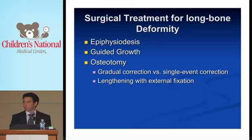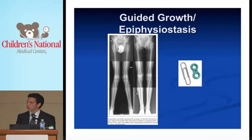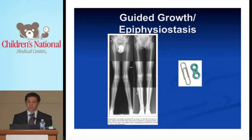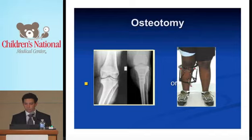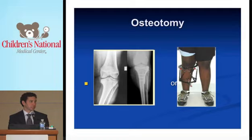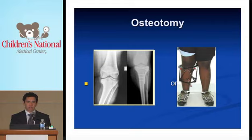Briefly on surgical treatment for long bone deformity: we have a number of treatment options — epiphysiodesis, guided growth, and osteotomy. Guided growth or epiphysiostasis uses a small plate across one side of the growth plate as a tether, allowing the other side to overgrow and correct the deformity — as seen in the radiographs shown here. This is why we would like to see patients with genu valgum or genu varum prior to skeletal maturity. Some patients require osteotomy; once skeletally mature, osteotomy is the only way to correct alignment. This can be done as a single event with internal plate fixation, or gradually with an external fixator.